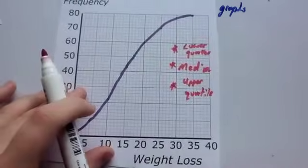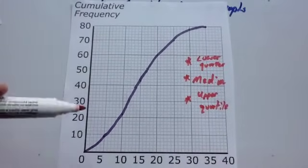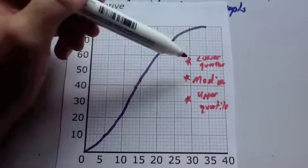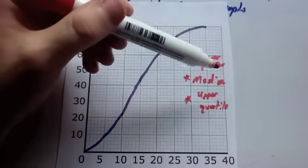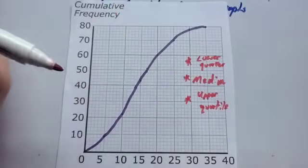So let's have a look at a cumulative frequency graph. Here's one I've drawn earlier and it shows weight loss along the x-axis and cumulative frequency along the vertical axis. And we're going to look at three things today. We're going to look at how to find the median first of all, and then how to find the lower quartile and the upper quartile.